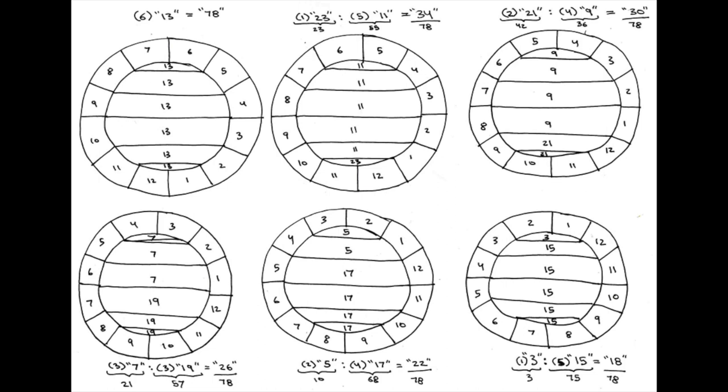Just so, 1 sum of 3 plus 5 sums of 15 equals 78 grand total for the first array, 2 sums of 5 plus 4 sums of 17 equals 78 for the grand total of the second array, and so forth, such that each array adds up to the same 78.